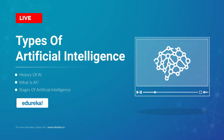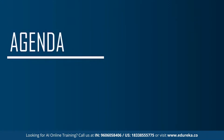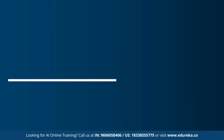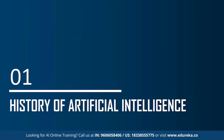Let me begin by discussing the agenda. We'll begin by understanding the history of artificial intelligence, then what exactly AI is, followed by the different stages of AI, the different types of artificial intelligence, and finally the different branches or domains of artificial intelligence. Now let's get started with the first topic: the history of artificial intelligence.